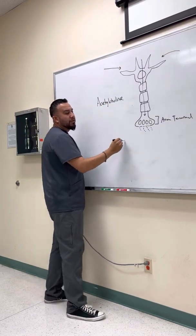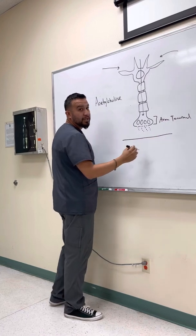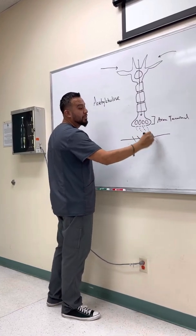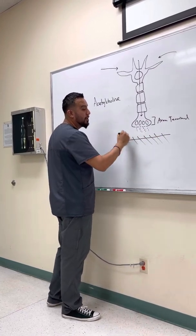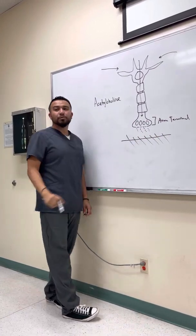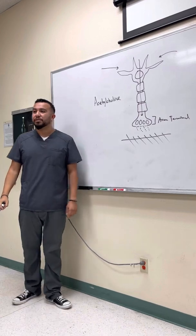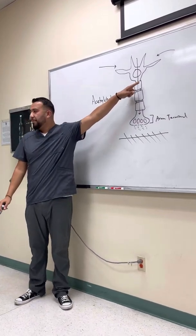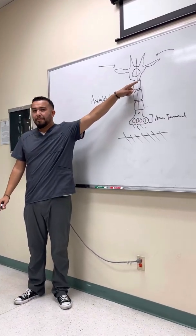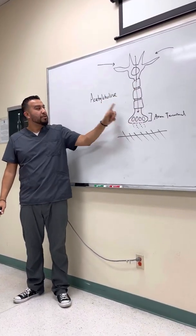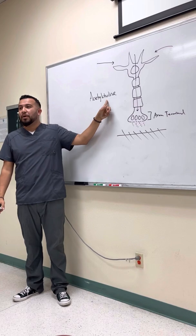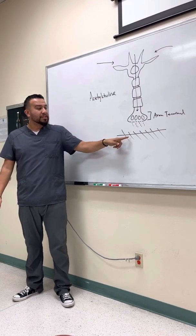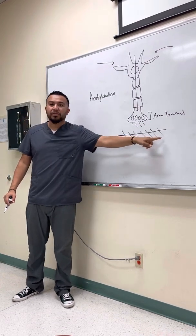Then you have the target tissue — for this particular case, it's going to be the muscles. These little lines I'm drawing are known as the receptor sites. The neuron is the pitcher, the neurotransmitter acetylcholine is the ball, and the receptor sites are the catchers.